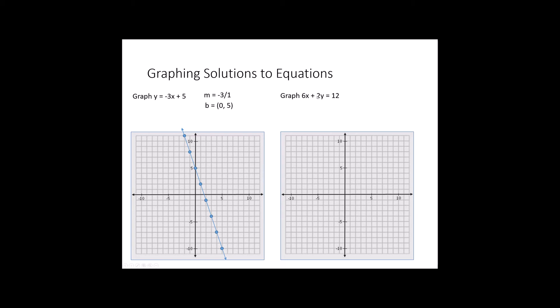Over here in my second graph, 6x plus 2y equals 12, I notice that this is in standard form. Most of the time what I'm going to do is use the graphing intercepts method to graph this. When I look at this equation, I'm going to ask myself, what happens if x is a 0? Well, 6 times 0 becomes 0, leaving me with just 2y equals 12, which gives me a y of 6. So when x is 0, y is 6.